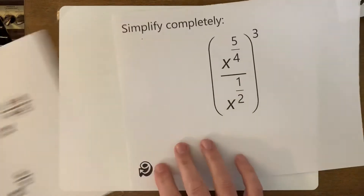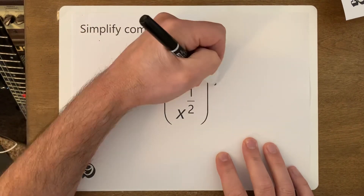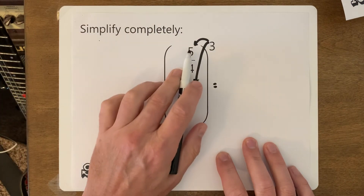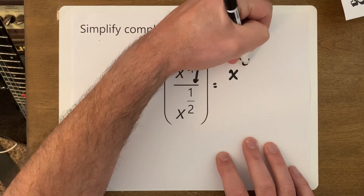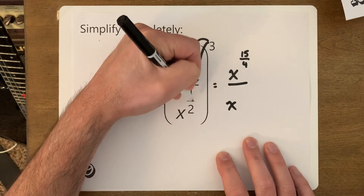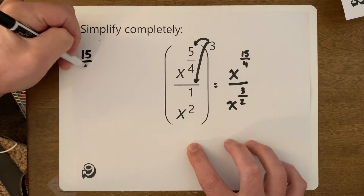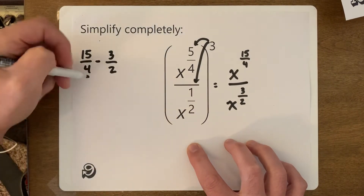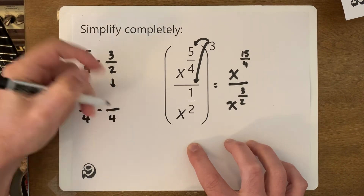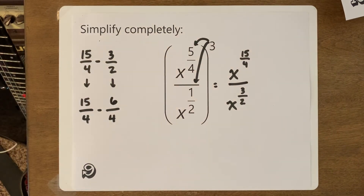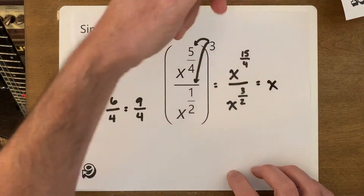This one has a 3 on the outside, and as we saw with integer exponents we have to distribute it. 3 times 5 fourths — when you multiply a fraction by an integer, you only multiply the numerator — gives x to the 15 over 4, divided by x to the 3 times 1 over 2, which is 3 over 2. Now subtract: 15 over 4 minus 3 over 2. The common denominator is 4, so multiply 3 over 2 by 2 to get 6 over 4. 15 take away 6 is 9, giving x to the 9 over 4.